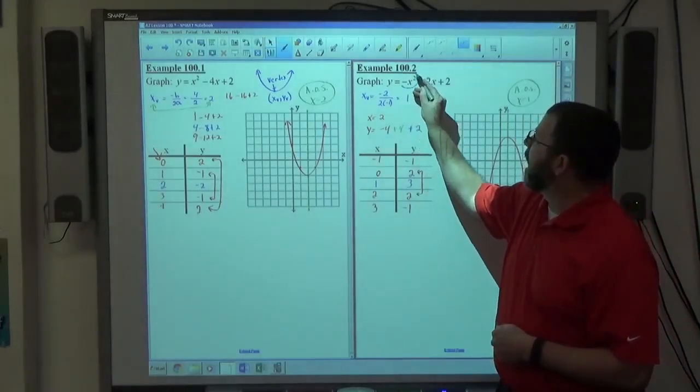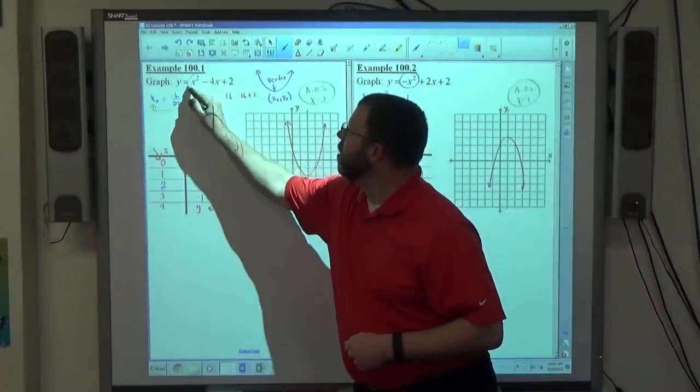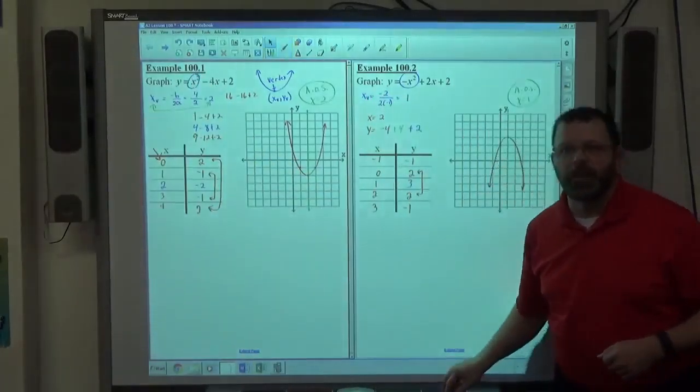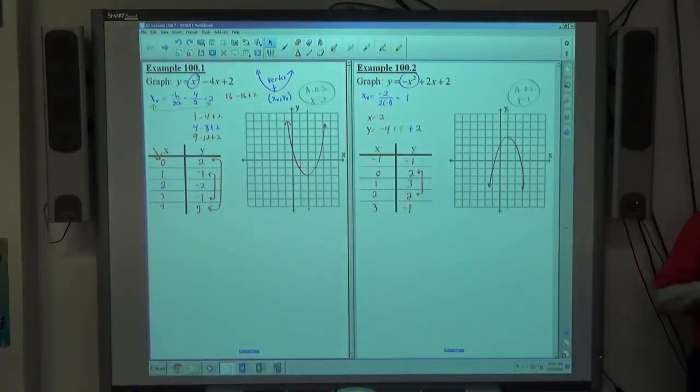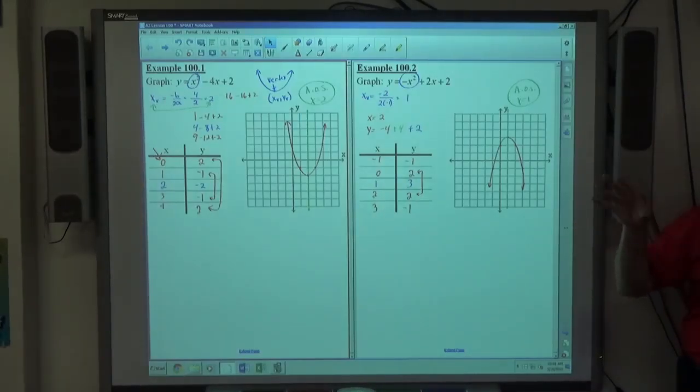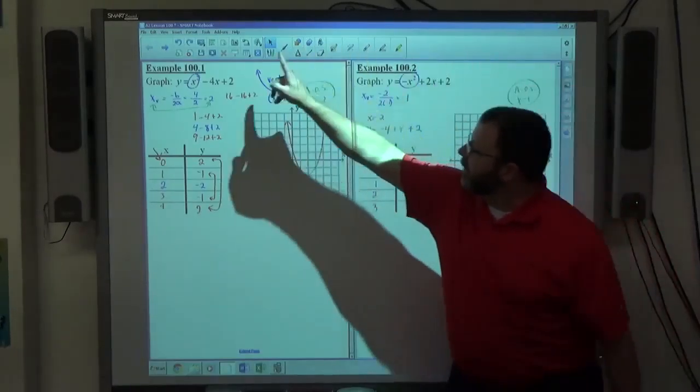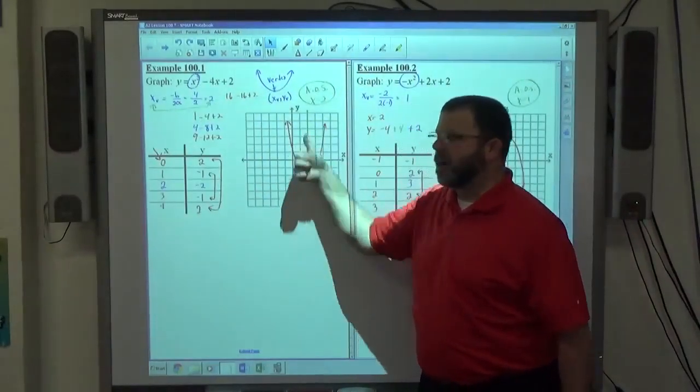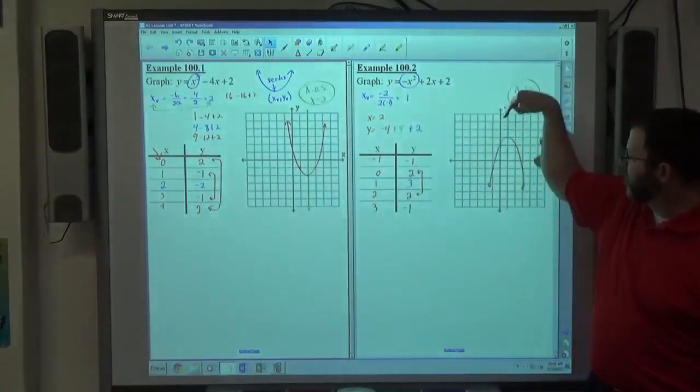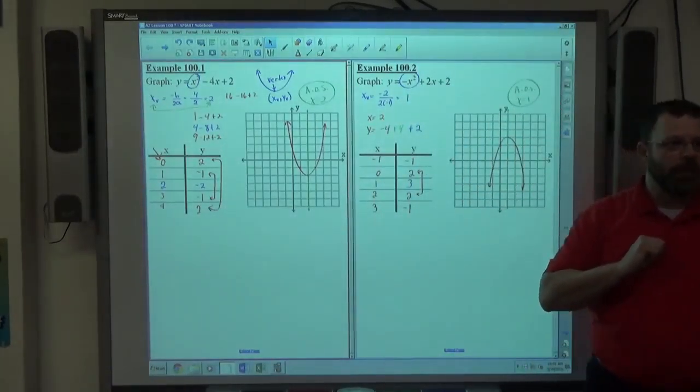What we have here is the lead term, the highest power term. Whenever you're looking at polynomial functions, the highest power term carries the most weight. If you're squaring a number, it makes that number grow in size much larger than the rest of the number compared to each other. So if the lead term is positive, you're going to get an upward turning parabola. If the lead term is negative, you're going to get a downward turning parabola every single time.